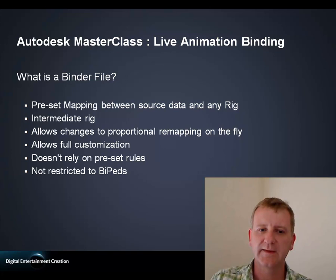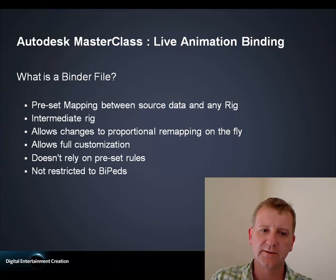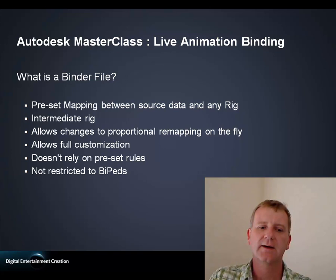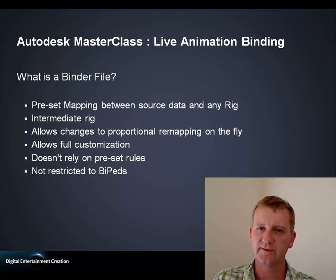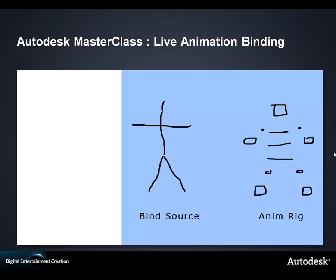It relies on a binder file. What is a binder file? The binder file is the preset mapping between your source data and your rig — a file you've set up, an intermediate rig that explains how you map data from A to B. It allows for proportional remapping on the fly, which is the big thing to get across. It's also extremely customizable because it doesn't rely on rules. We used to do this in code, automatically binding everything, but in production something always breaks the standard rules — a character might have a tail or two heads. So we decided it was easier to have an intermediate binder file that we could manually tweak.